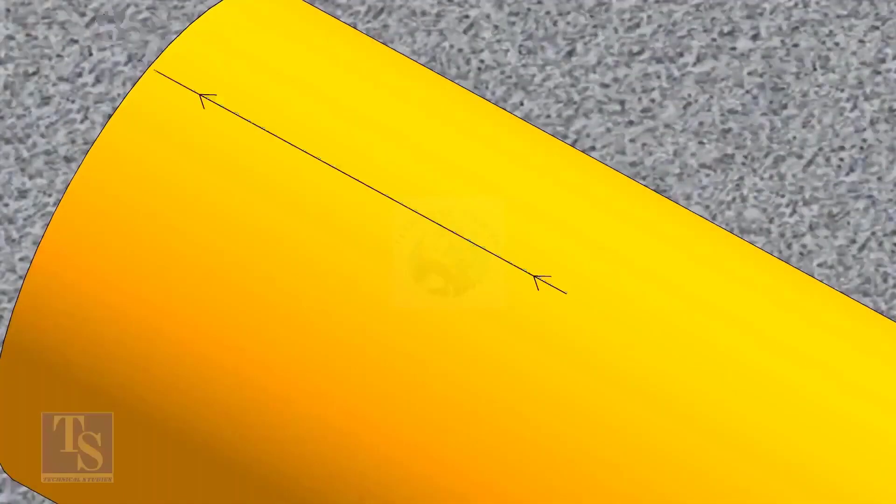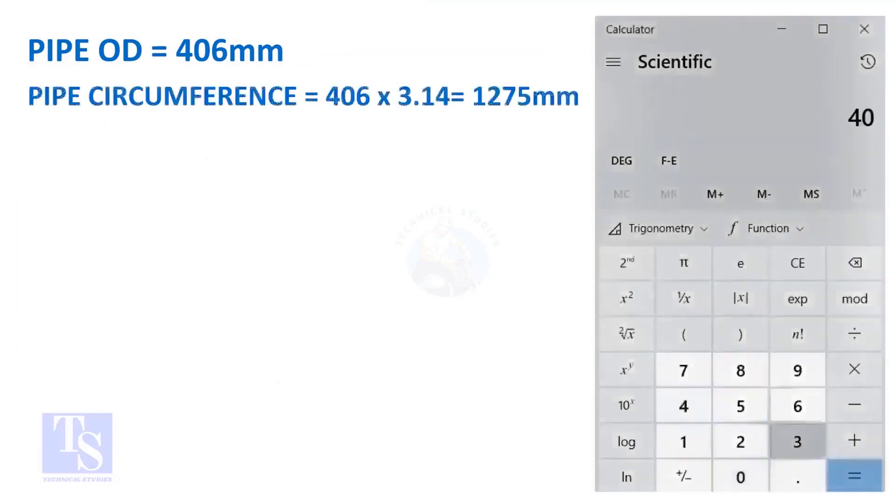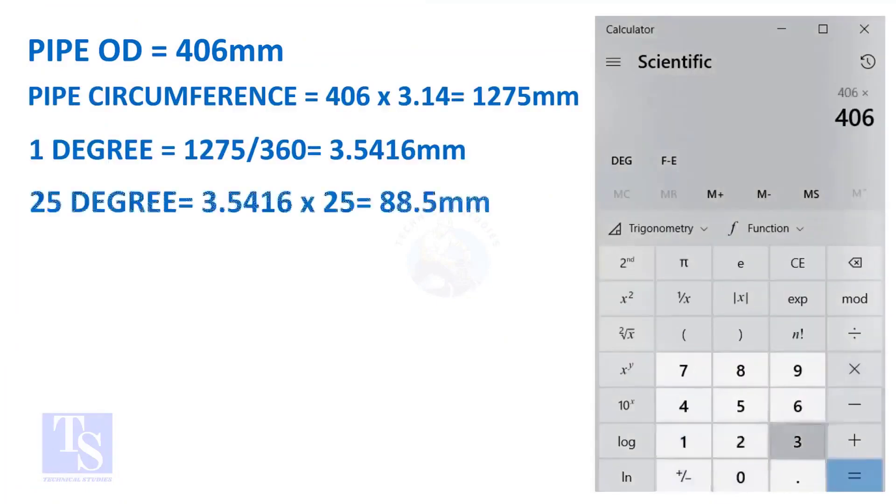Let us calculate the circumferential distance or arc length for 25 degrees. Multiply the OD by 3.14. You will get the circumference of the pipe. Divide the circumference by 360, you will get the arc length of 1 degree.